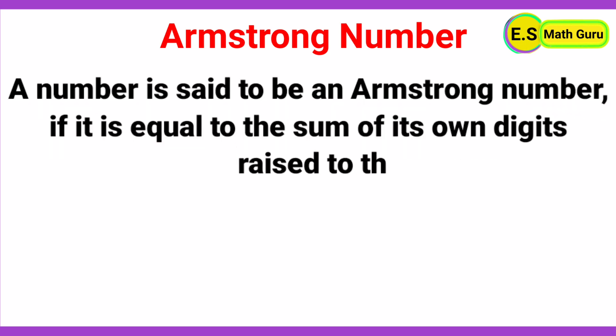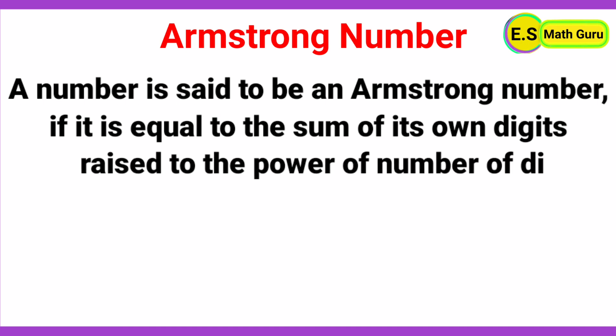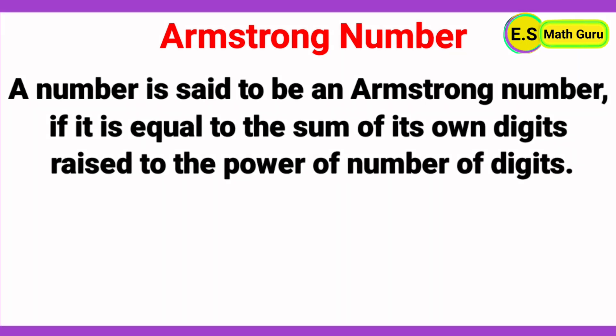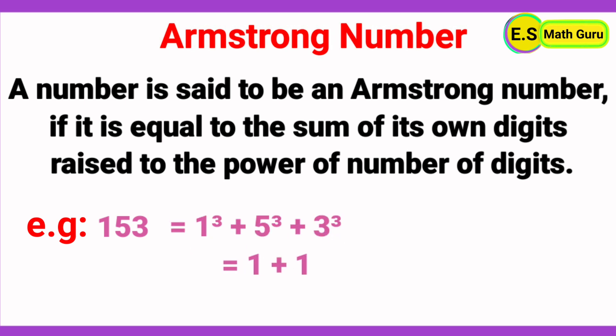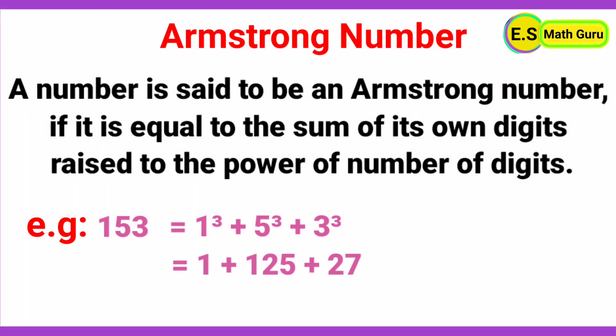Next, Armstrong number. A number is said to be an Armstrong number if it is equal to the sum of its own digits raised to the power of the number of digits. For example, 153 has three digits. The sum of the digits of 153 raised to the power of 3 is equal to 1³ + 5³ + 3³, which equals 1 + 125 + 27, which equals 153.